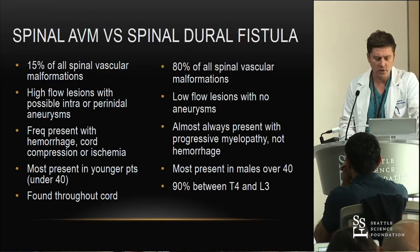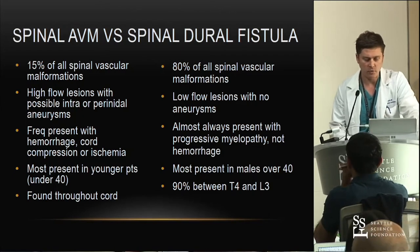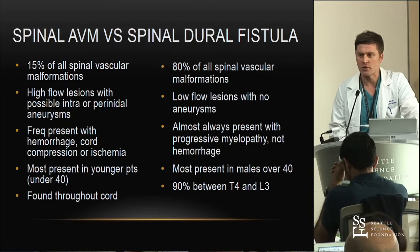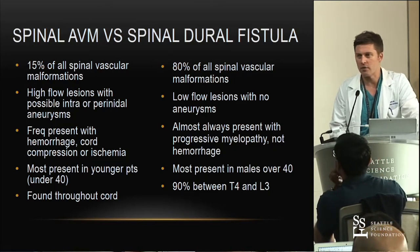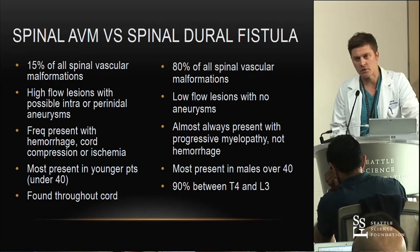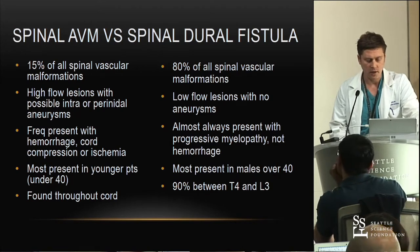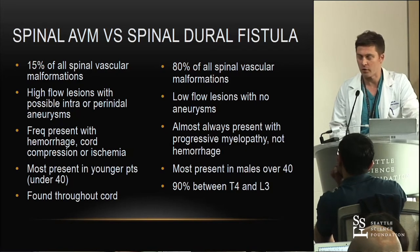Just to compare the two: spinal AVMs are rare, while dural fistulas are much more common. The fistulas are low flow; the AVMs are high flow. AVMs present with hemorrhage, whereas fistulas usually present with myelopathy or slowly progressive symptoms, tend to be in older patients, and are found between T4 and L3.